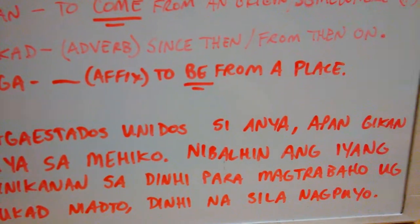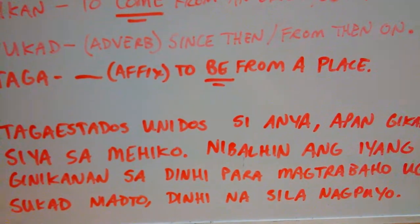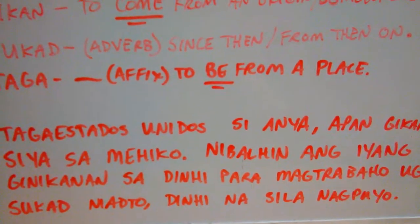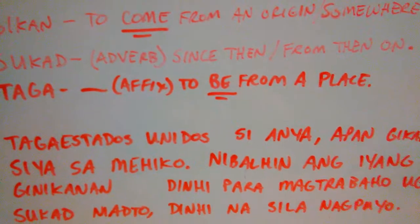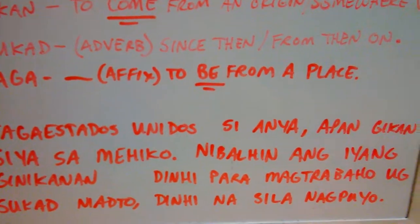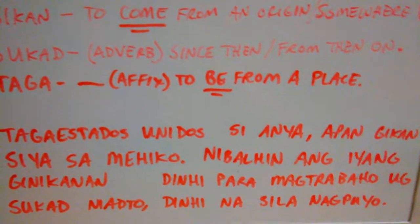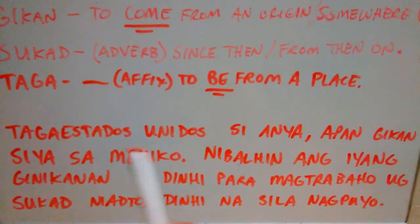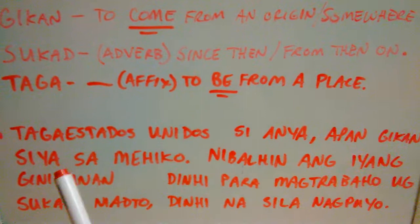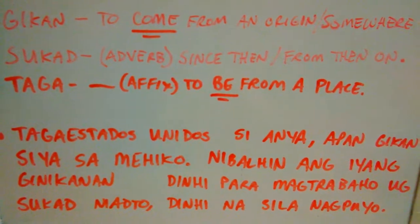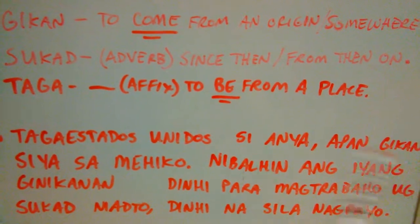Taga Estados Unidos si Anya apan gikan siya sa Mexico. Nibalhin ang iyang ginikanan dinhi para magtrabaho, ug sukad niya to, dinhi na sila nagpuyo. So, Taga Estados Unidos si Anya — Anya is from the United States. But, apan gikan siya sa Mexico — she came from Mexico. She is from the United States, but she came from Mexico.